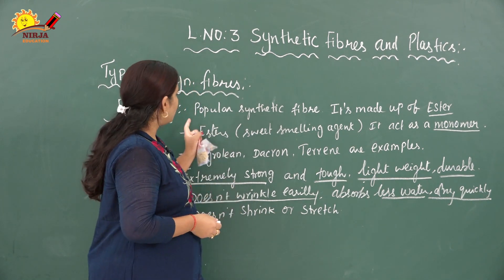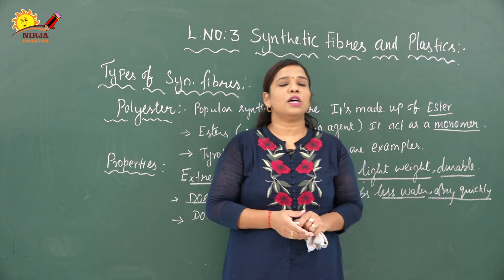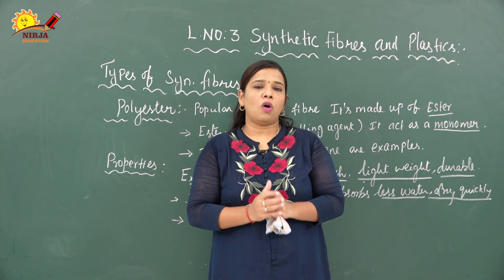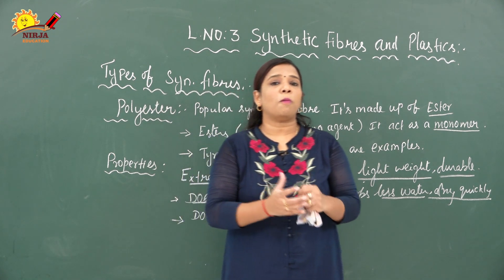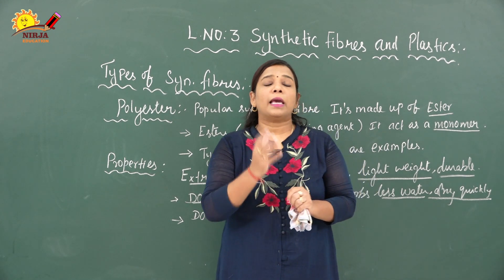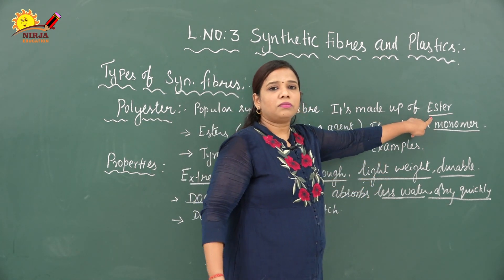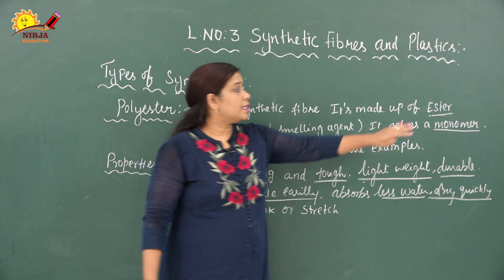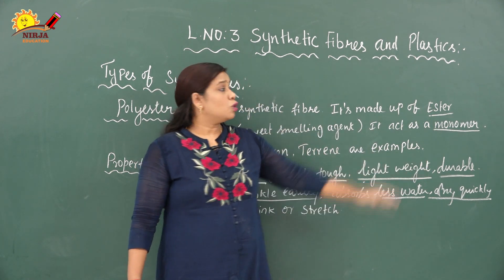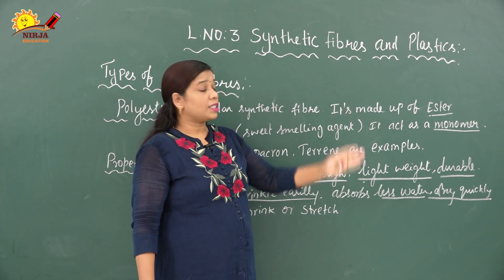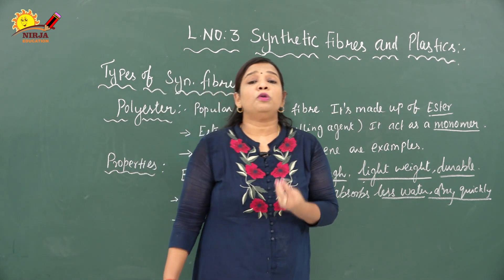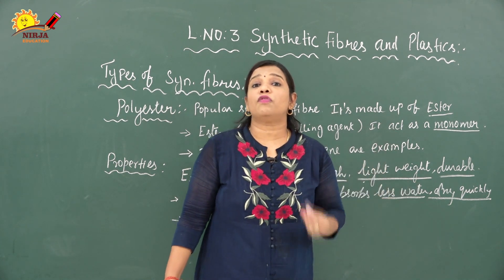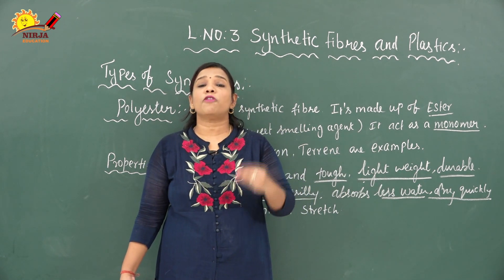Previously we discussed rayon and nylon. Now we are going to discuss polyester. Polyester is one of the most popular synthetic fibers in the world. It is prepared from a chemical substance called ester, which is a petroleum product. Ester acts as the monomer for polyester — many esters combine to make polyester. Ester is also called a sweet-smelling agent. The preparation of ester is called esterification, which you will study in higher classes.